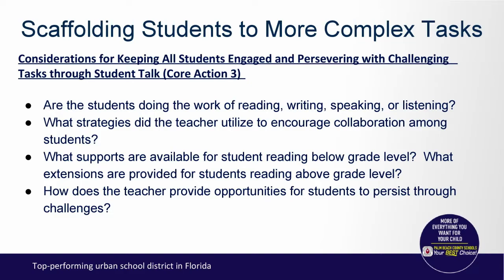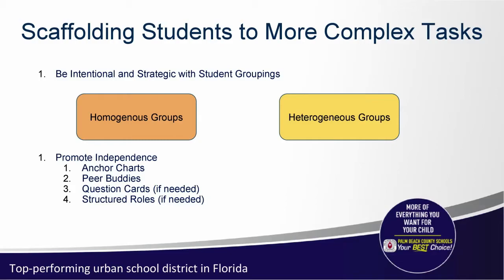In addition to Core Action 2 standards-based tasks, you'll want to keep in mind Core Action 3 — collaboration and talk. We want to make sure we allow all students the opportunity to work together and engage in these tasks. These points provide you with areas and thoughts to consider as you're planning, making sure you have intentional places for collaboration to take place. On the next slide, you will see ways to scaffold for students so they can tackle these complex tasks — including grouping in either homogeneous or heterogeneous groups depending on the purpose, or using anchor charts, partner work, question cards, or structured roles within those groups.